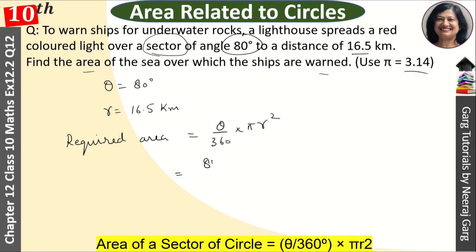And theta, we have given 80 upon 360 into pi, we have 3.14. And r has given 16.5 into 16.5.